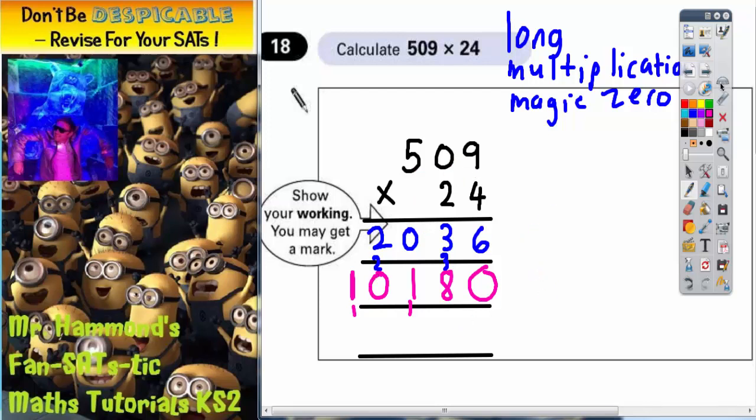Now on the final line, all we need to do is add these two answers together. Because this answer in blue is 4 lots of 509, and this answer in pink is 20 lots of 509. And if we put the two together, we will have 24 lots of 509, which is what we're actually trying to find. So we just need to add them together now.